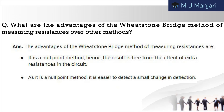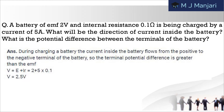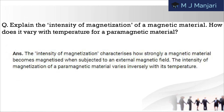Next: what are the advantages of the Wheatstone bridge method of measuring resistance over other methods? Next question: a battery of EMF 2 volts and internal resistance 0.1 ohms is being charged by a current of 5 amperes. What will be the direction of current inside the battery? What is the potential difference between the terminals of the battery?